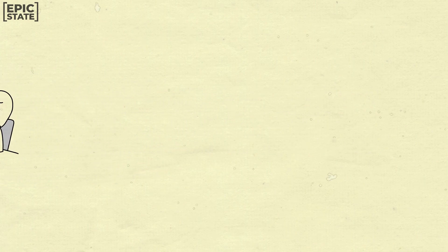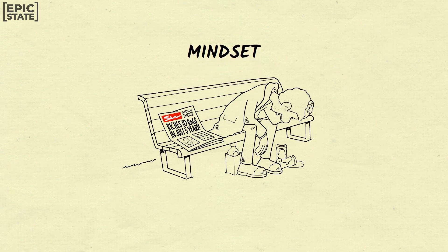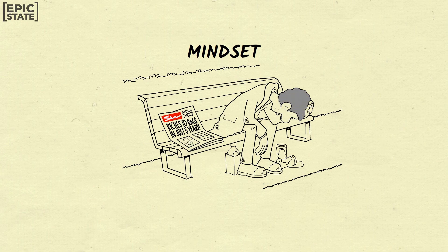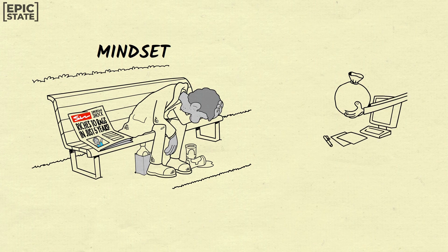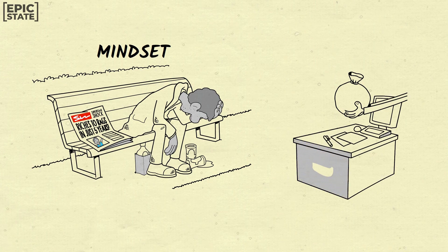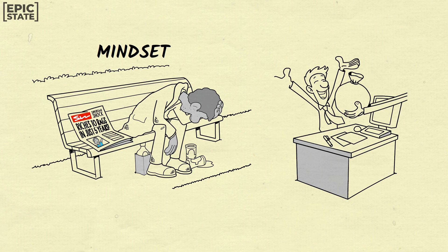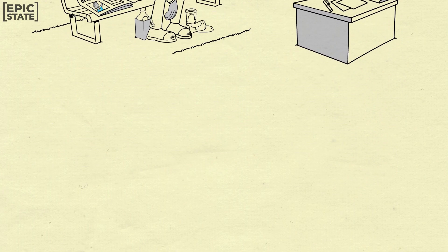Number eight: Poor people have a scarcity mindset, while rich people have a mindset of abundance. Poor people often view the world through the lens of scarcity, believing that resources are limited and that there is not enough to go around. Wealthy individuals, on the other hand, have an abundance mindset, believing that there are always opportunities to create more wealth and that resources are abundant. This mindset is a key habit of successful people, and it can help anyone to achieve financial success.